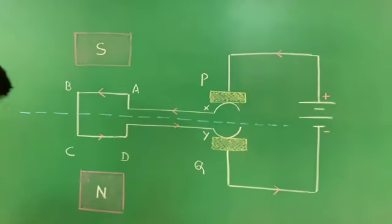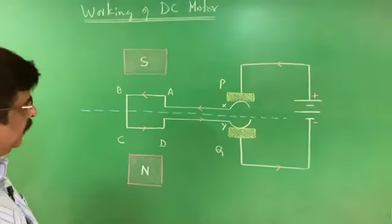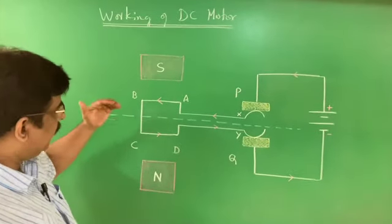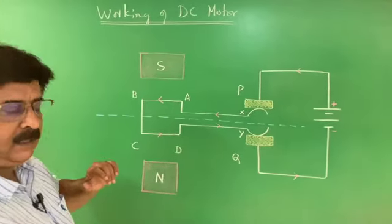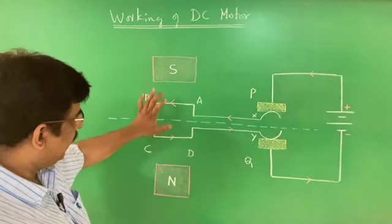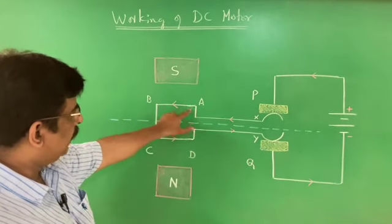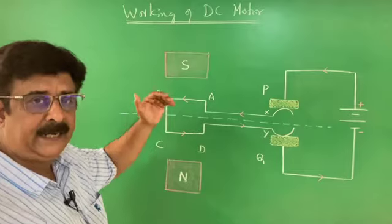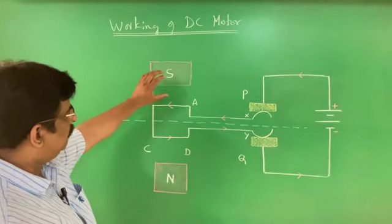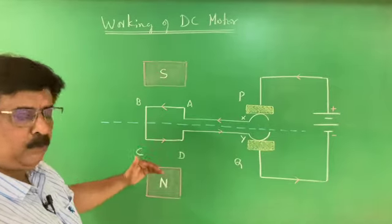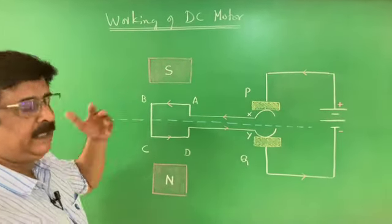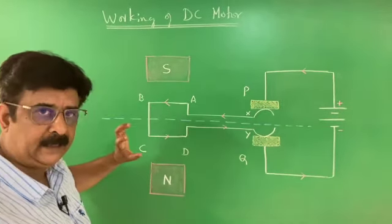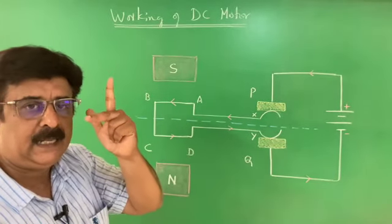According to Ampere's experiment, a conductor carrying electric current kept inside a magnetic field experiences a force. The coil is kept inside the magnetic field. When current is allowed to pass through the coil, each and every part of the coil is a current-carrying conductor placed between the magnetic poles. Therefore it experiences a force, and by that force it has to turn and rotate. That rotation is verified by Fleming's Left Hand Rule.